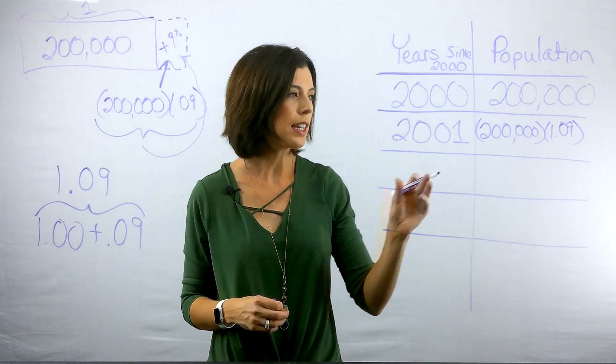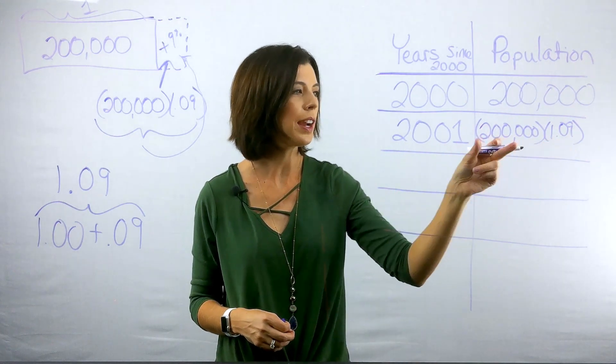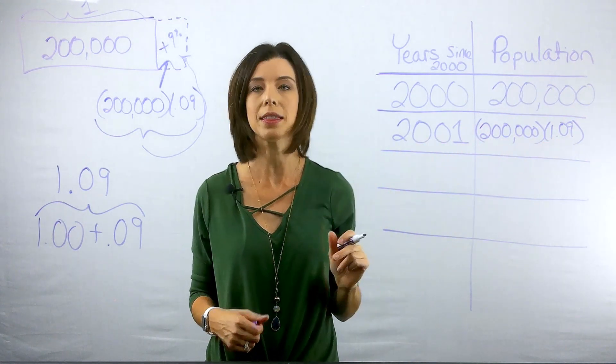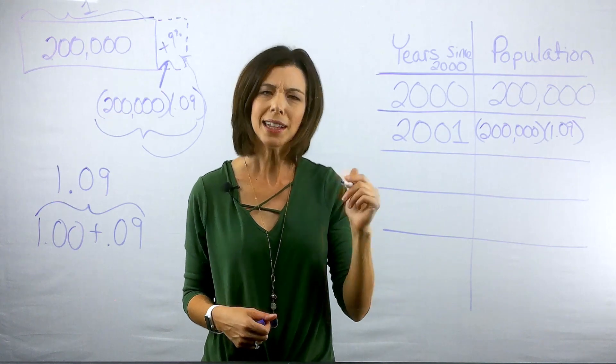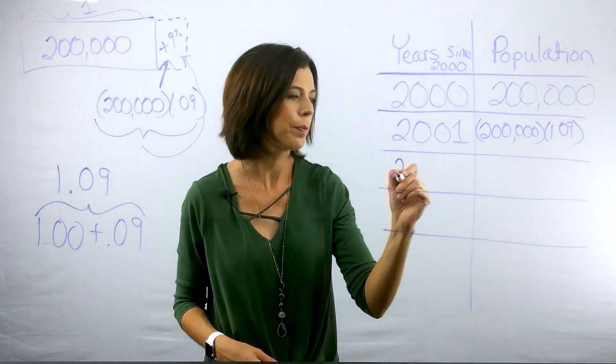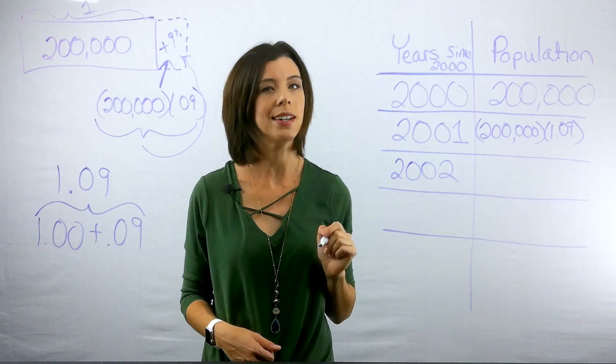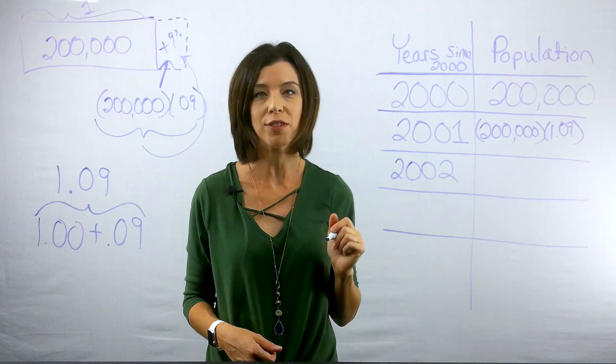Now without solving this, I can see that if I multiplied 1.09 times 200,000, I would get the population for 2001. Let's see what happens with 2002. Now again, I'm purposely not solving because I want you to see if you can find a pattern.